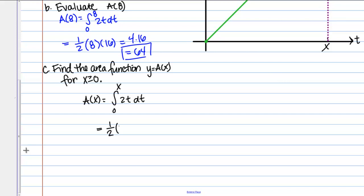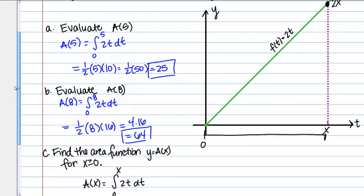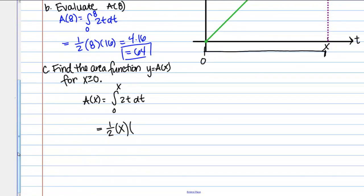The base is going to be given by x because this is the length of the base and the left endpoint here is at 0. The distance of the side is x, so the base is x. Then the height of the triangle is given by the function value and we just said that was 2x. The 2's cancel and I just end up with x². I'm saying that the area function is x².